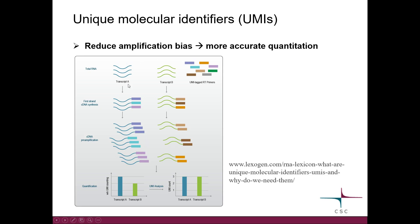For example, consider transcript A and transcript B, which are expressed at similar levels. However, there is amplification bias for transcript A, so that in the cDNA pre-amplification step we get three copies of it, whereas we only get two copies of transcript B. If we then do sequencing and counting, we would conclude there is more transcript A than B, even though the level was actually the same to start with.